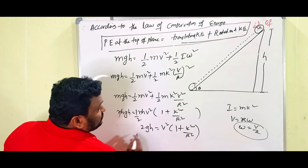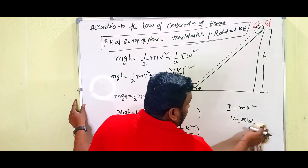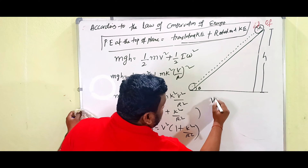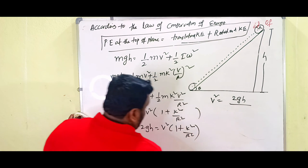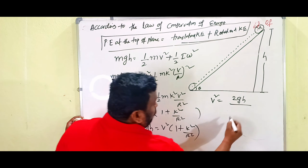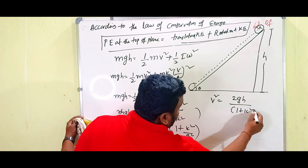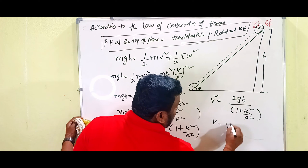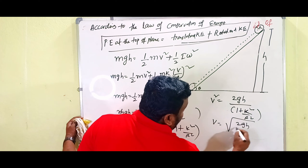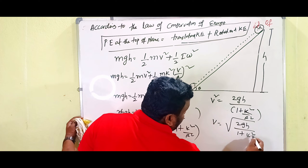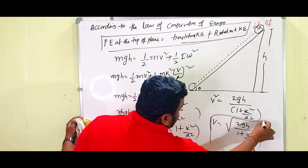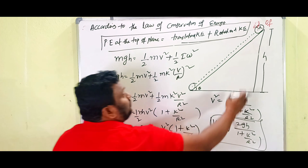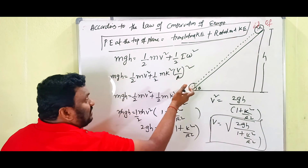From 2gh = v²(1 + k²/r²), we get v² = 2gh / (1 + k²/r²), and therefore v = √(2gh / (1 + k²/r²)). This is the velocity of the body when it rolls along the inclined plane without any slipping.